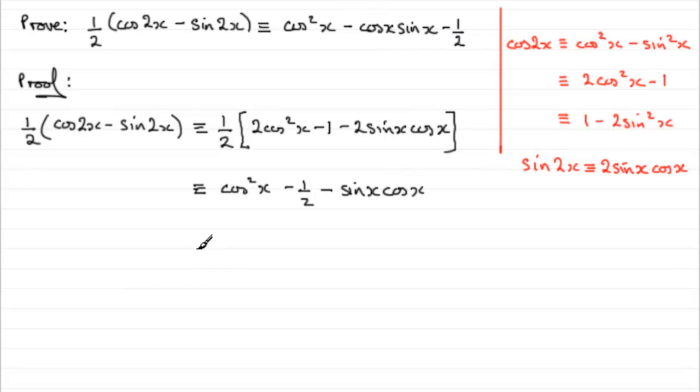But what I would always encourage you to do is always finish exactly the same as the thing you've got to prove. So, we'll rearrange that. Cos squared x, turn those two terms, or factors, I should say, in this term, around. And then you've got minus cos x sine x. And then you've got simply the minus 1 half. And there you go.